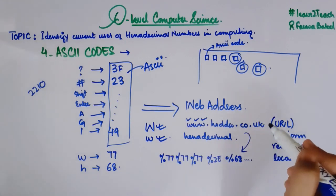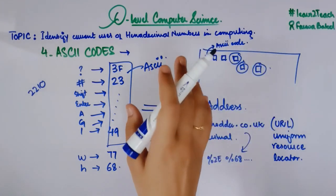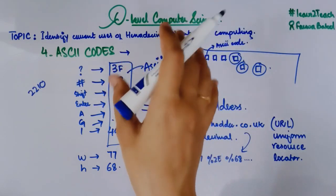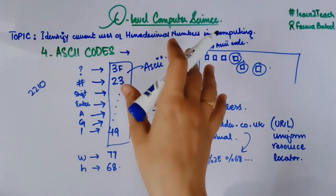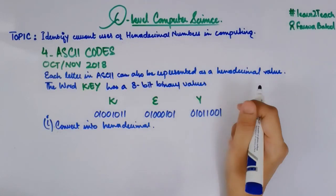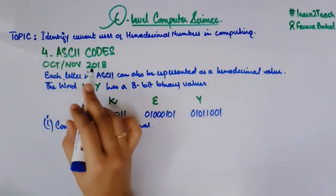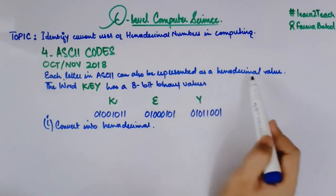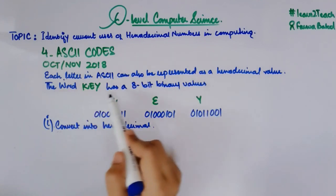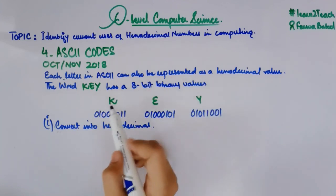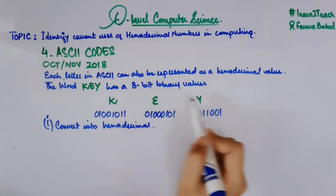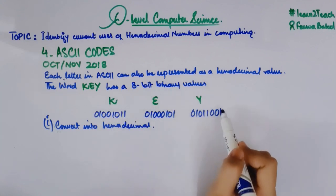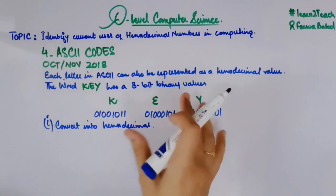I hope that ASCII codes are clear to you. Now I am going to share a past paper example so it will be very clear. This is from October/November 2018. It says: each letter in ASCII can also be represented as a hexadecimal value. The word KEY — K, E, Y — has an 8-bit binary value for each character. We need to convert each 8-bit binary value into hexadecimal.